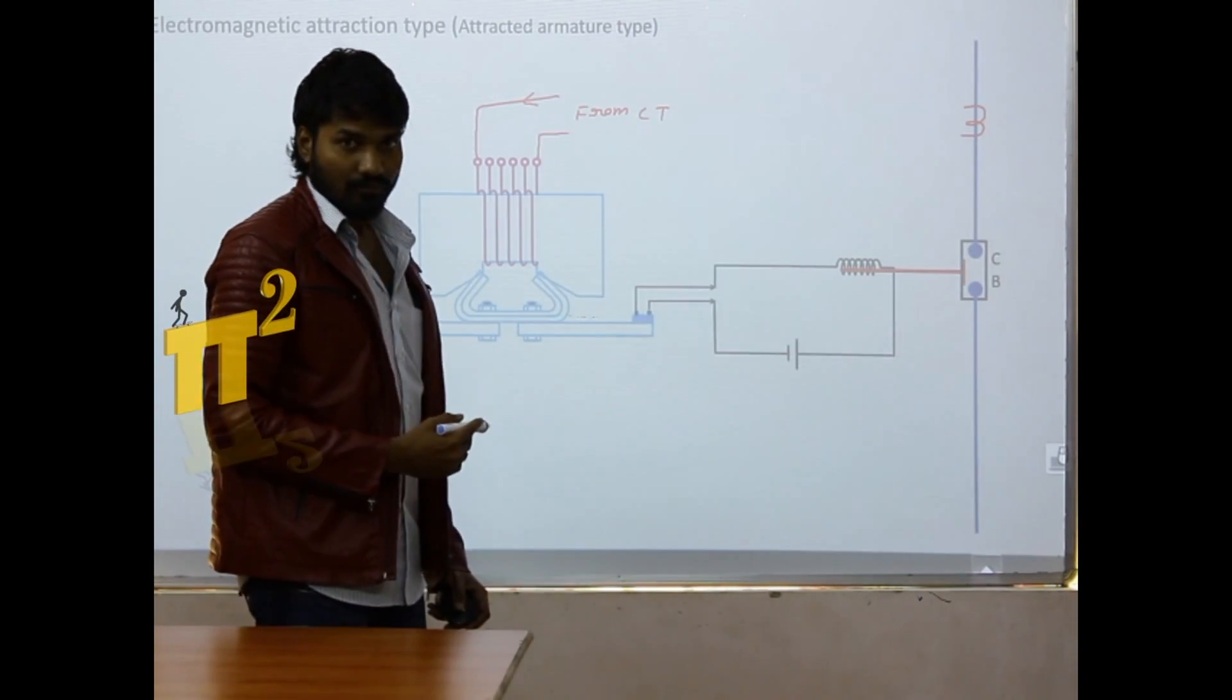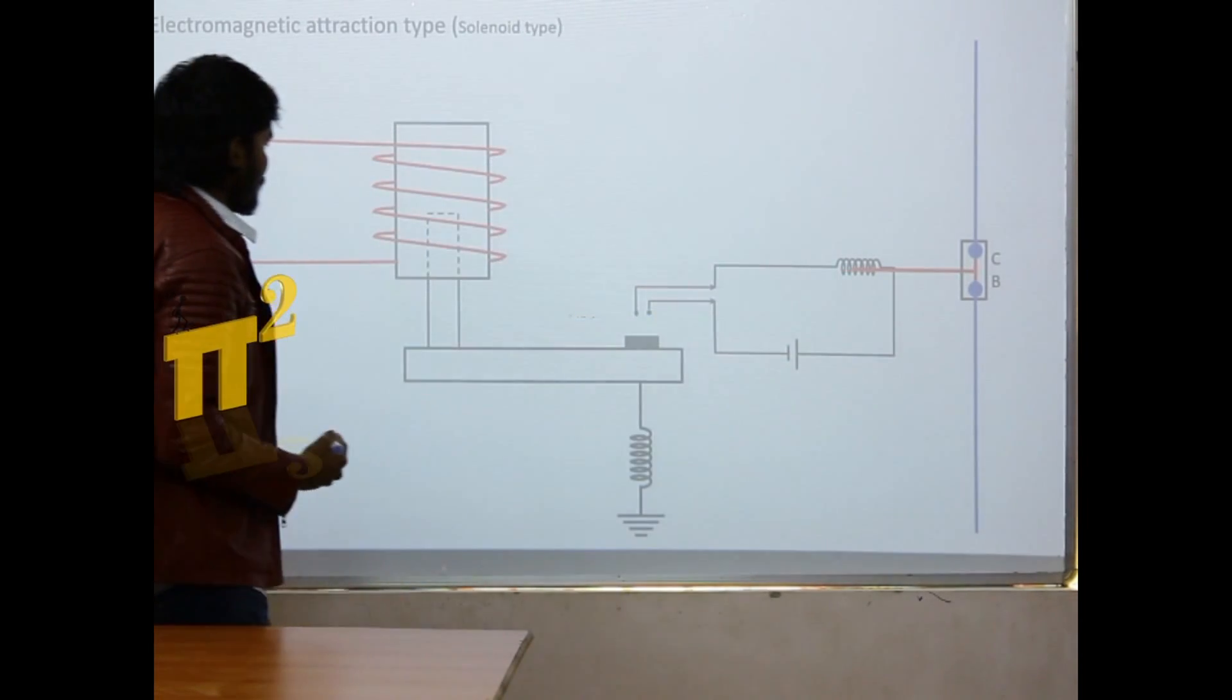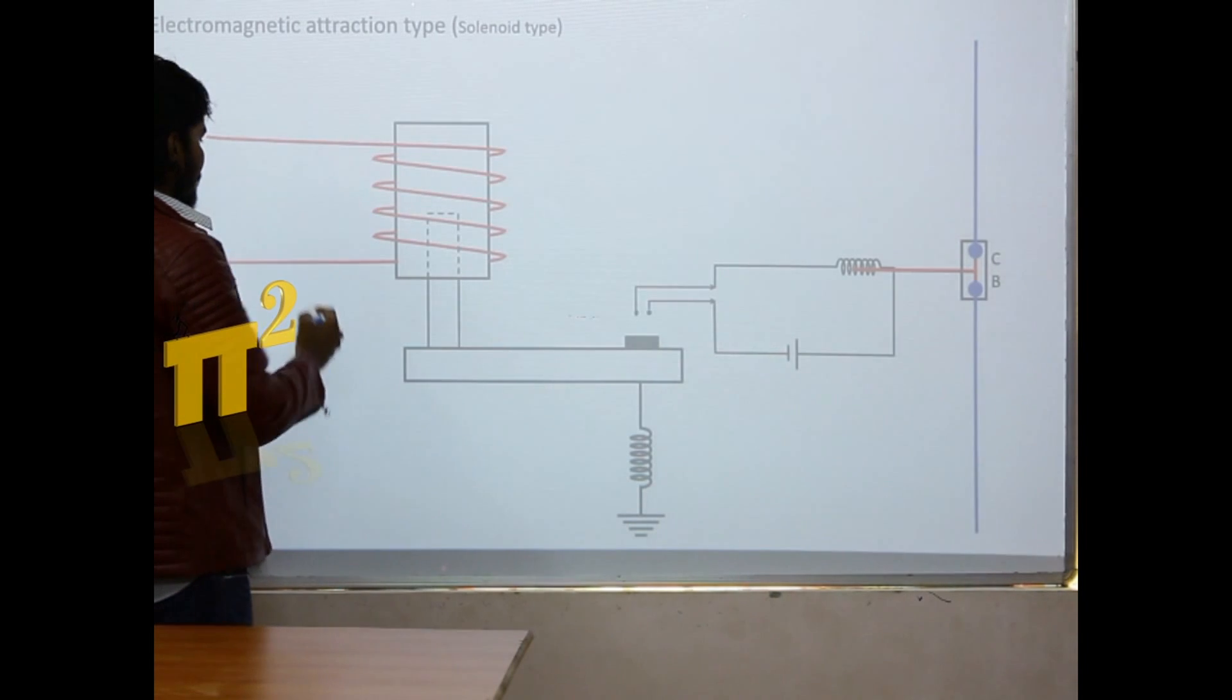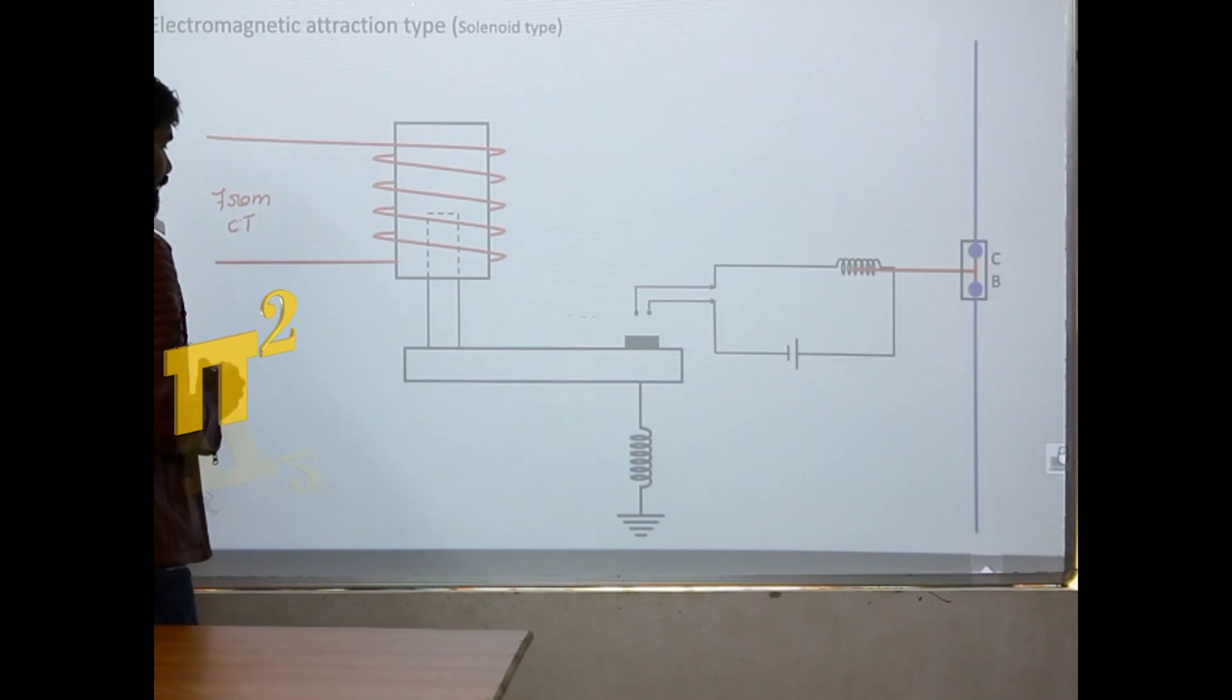So here is one relay. Let's go to another type of relay. Solenoid type relay. Here also same thing, this is fed from the CT, it is fed from the current transformer.